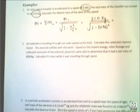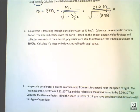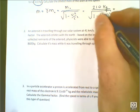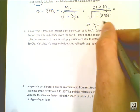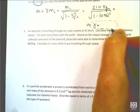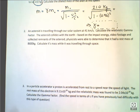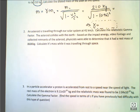I'll get you a number. I don't have my calculator handy right now, so leave that for an exercise for yourself. You might also want to state this implies the gamma factor equals, so you can also write down what the gamma factor is, just so you know it's a multiplier in this case. Question number two is, an asteroid is traveling through the solar system at 41 kilometers per second, it's pretty quick. Calculate the relativistic gamma factor. The asteroid collides with the Earth based on the impact energy video footage. Collective remnants of the asteroid physicists were able to determine that it had a rest mass of 8,600 kilograms. Calculate what its effective mass would be as it was traveling through space.